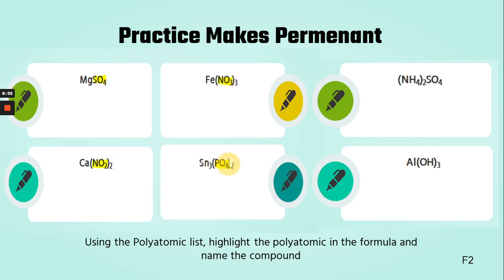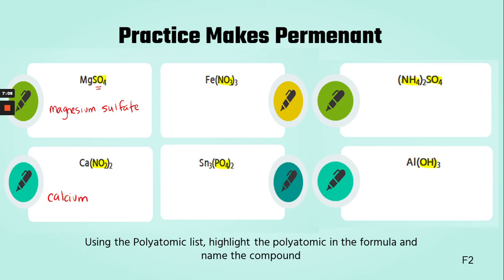Here we've got all of our polyatomics highlighted. Once I know that I'm dealing with a polyatomic, I know I'm going to be using both sides of the periodic table. We're going to use the same kind of naming as before — we use the first name of the metal. So this is magnesium, and then whatever this is right off the back of the table, we just copy it down. This one is sulfate. Here we have calcium, and again we just pull this name right off the back of the table — spelling counts — nitrite.